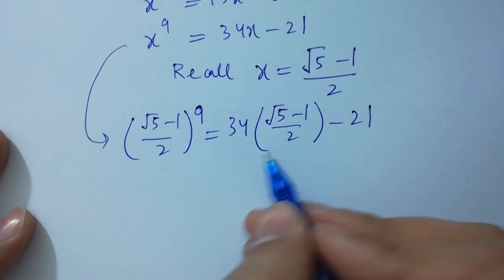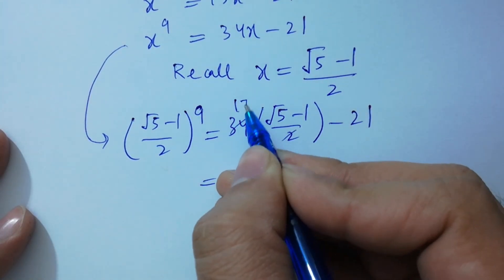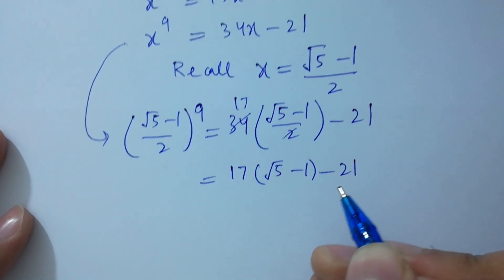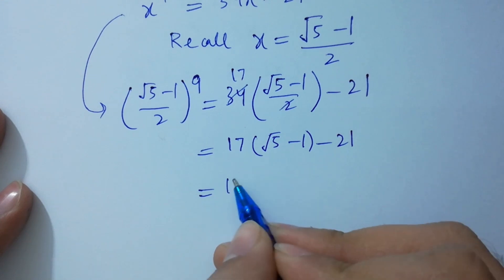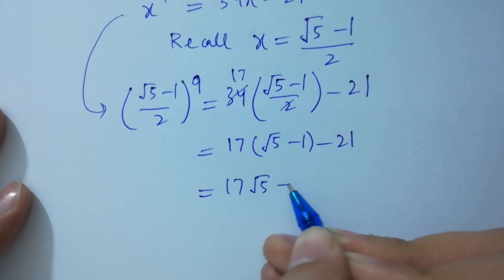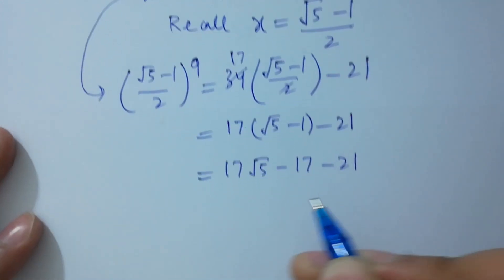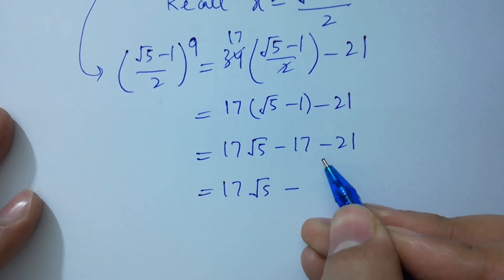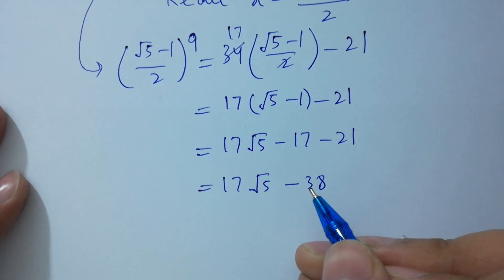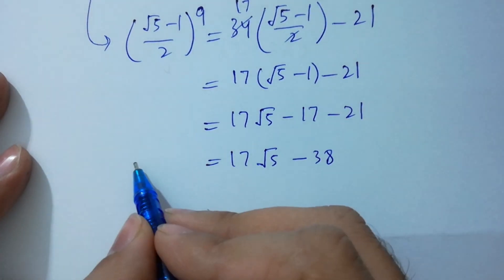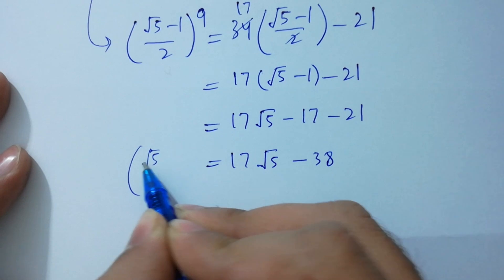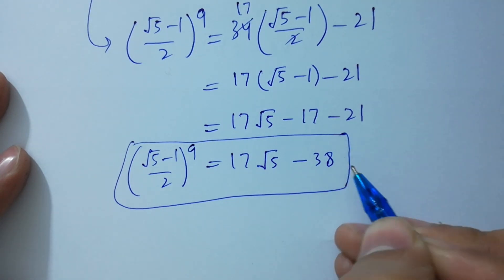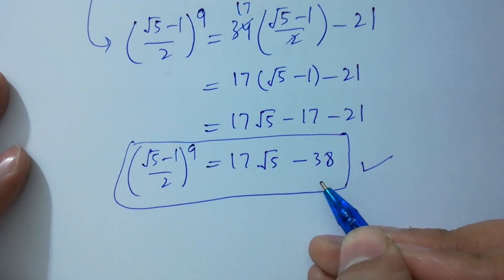Expanding: 17 square root of 5 minus 17 minus 21, and 17 plus 21 is 38. So finally, (square root of 5 minus 1) over 2 to the power 9 is equal to 17 square root of 5 minus 38.